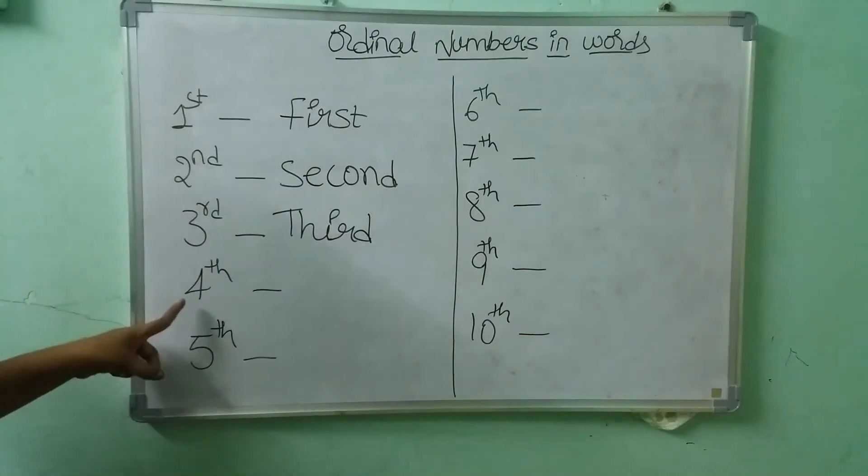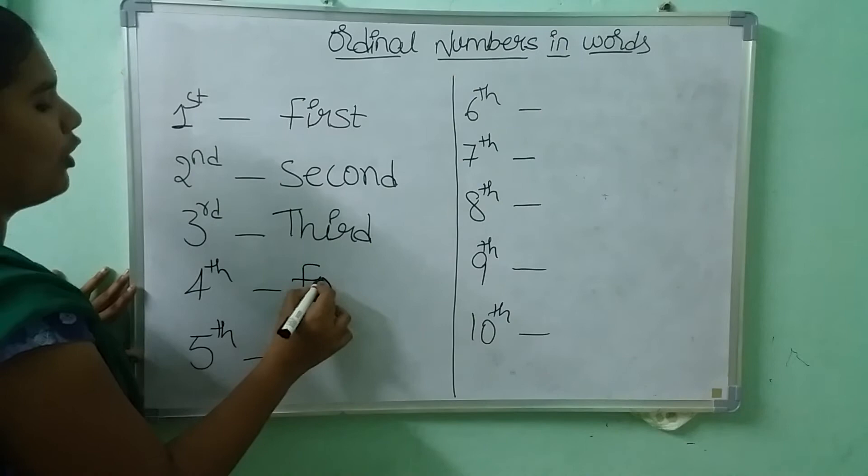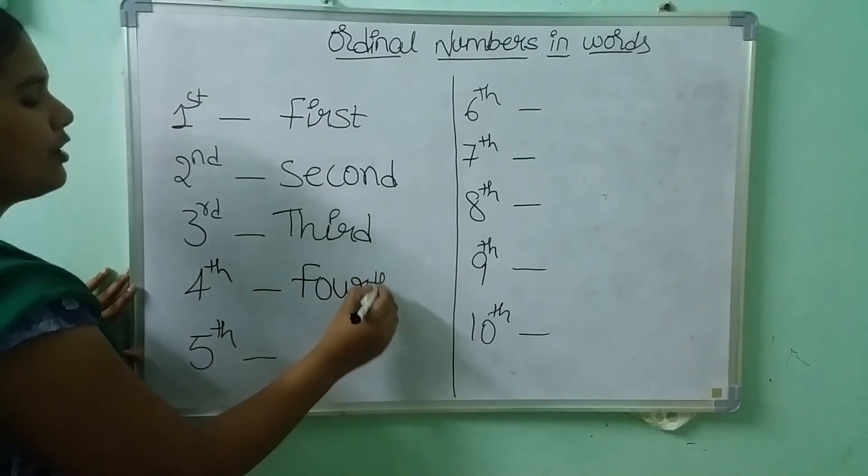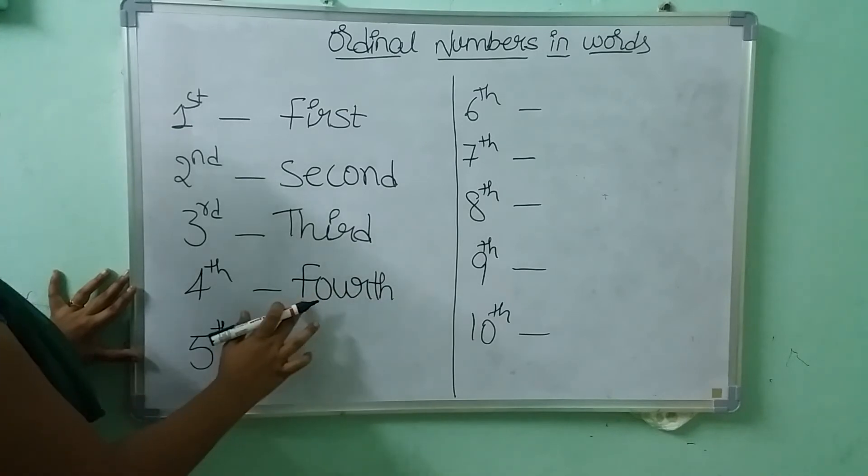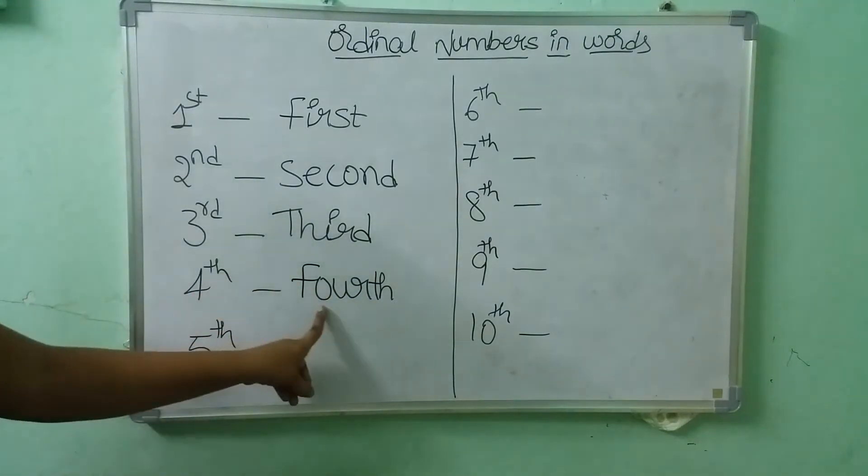Next we have fourth. What is this children? Fourth. Fourth. F-O-U-R-T-H. Fourth. F-O-U-R-T-H. This is fourth.